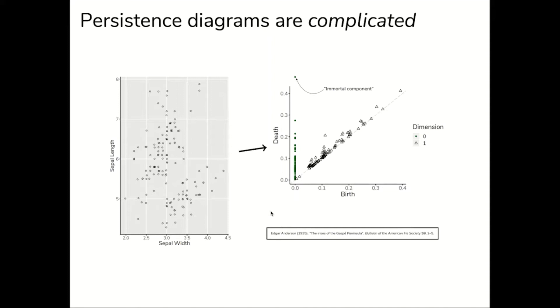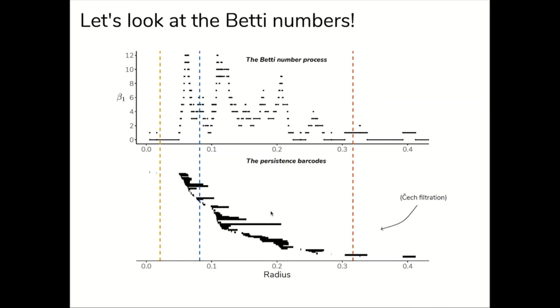So let's take a deeper dive and focus on the Čech complex formed from disks of radius R. In this slide we see the persistence barcodes and the corresponding Betti number process at each value of the radius R. The Betti number process just counts the number of barcodes across a dashed line at radius R. For a small radius, or the dashed orange line here, we see a small Betti one. Very few one cycles are formed because there's not a lot of connectivity.